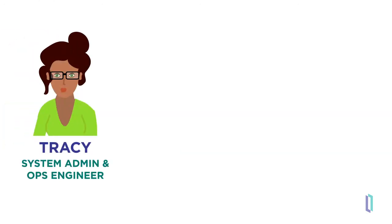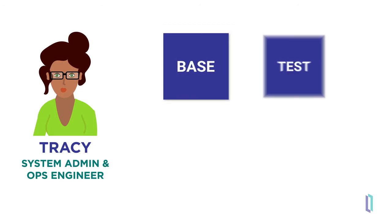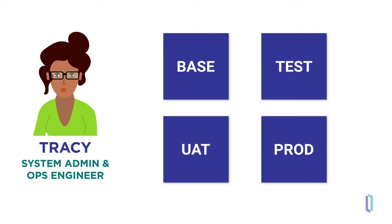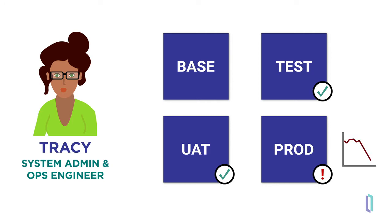Tracy is a system administrator and operational engineer overseeing several different application environments. She tries to ensure that the systems in all environments, from testing through production, are healthy. When an alert comes in about an overloaded node in a cluster or a storage issue on a node, it's Tracy's job to fix the problem. But Tracy is only human, and sometimes she just isn't fast enough to fix an issue before it has an impact. If a node goes down and the alert takes a few minutes, or if she is working on another project, the manual bottleneck can create downtime that impacts the business.